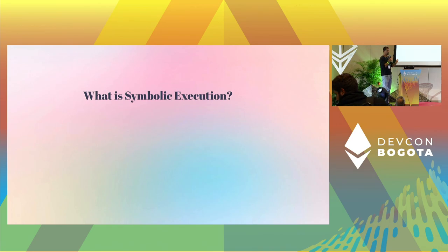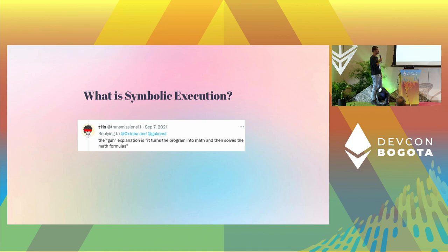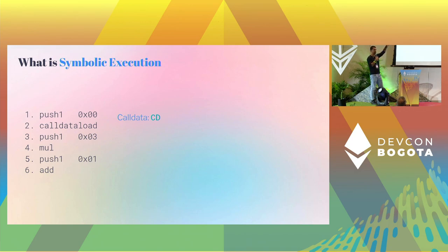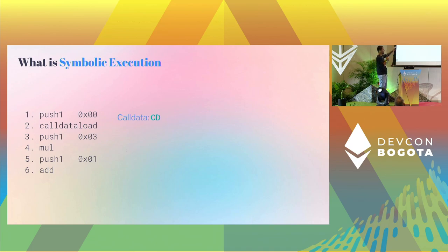So what is symbolic execution? T11 has a pretty good explanation: it turns the program into math and then solves math formulas. We have the same program, but instead of concrete call data, we have symbolic call data. That means we just use a variable instead of a concrete number — that's really all you do. Our entire call data is going to be CD, just a variable.